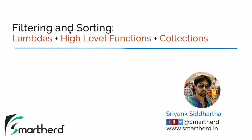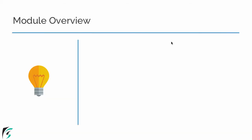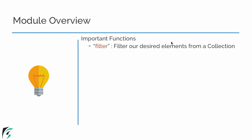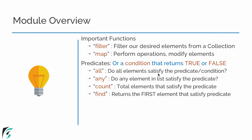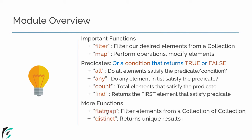With the help of filtering and sorting we will check out how we can use lambdas and high-level functions inside collections. In this module let us check out the topics we will cover. First, we will check out the various important functions such as filter and map — two very important methods frequently used with collections and lambdas. Then we will check out predicates in Kotlin: all, any, count, and find. At the end we will cover flat map and distinct.